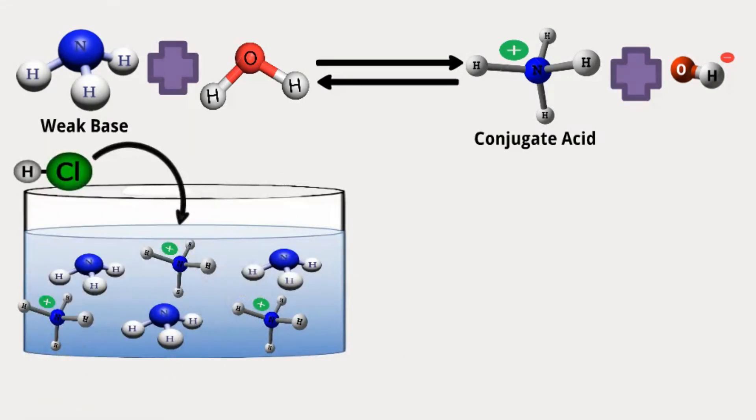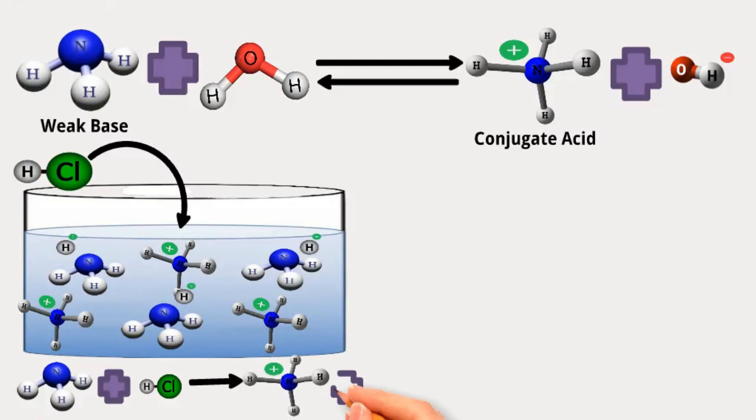Suppose you add hydrochloric acid, a strong acid. In that case, it reacts with ammonia and forms ammonium ions, a weak acid, and chloride ions.